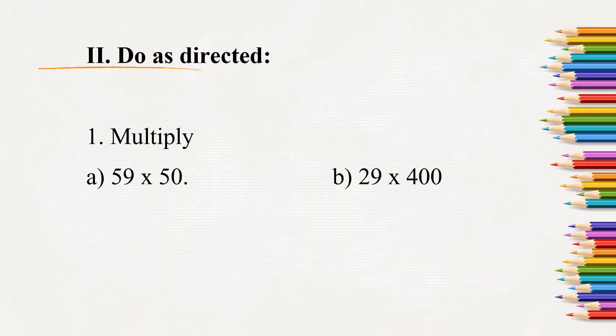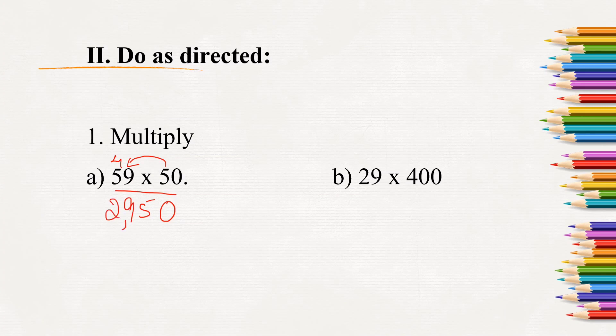Second main, do as directed. First question, multiply 59 into 50. Here again we will bring out 0 first. And then 5, 9 times is 45, 5 here, 4 carried. 5, 5 times is 25, plus 4 is 29. So the answer is, the product is 2950.